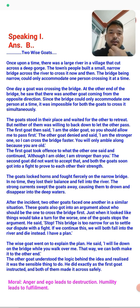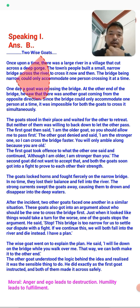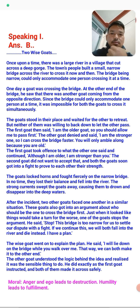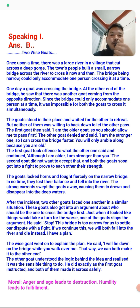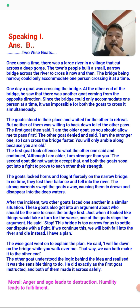This is a story about two wise gods. In the first picture, once upon a time there was a large river cutting across a town. The townspeople built a small narrow bridge across the river to cross it, but the bridge being narrow could only accommodate one person crossing at a time. One day a god was crossing the bridge and at the other end he saw another god coming from the opposite direction.